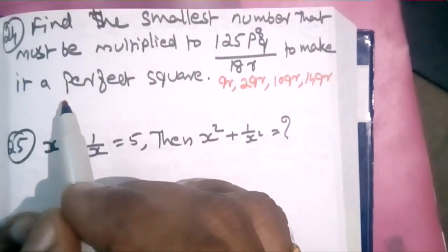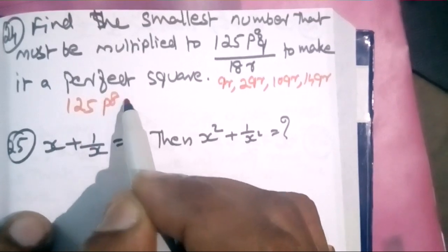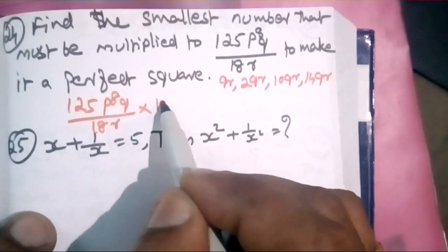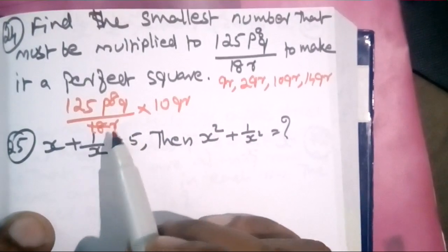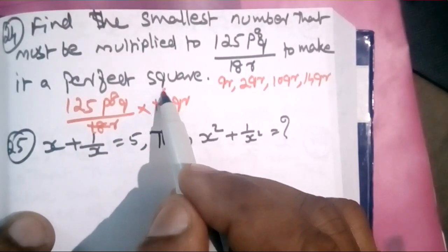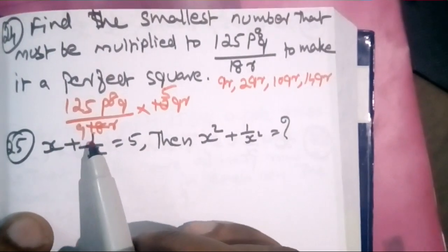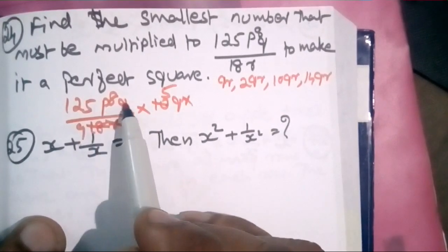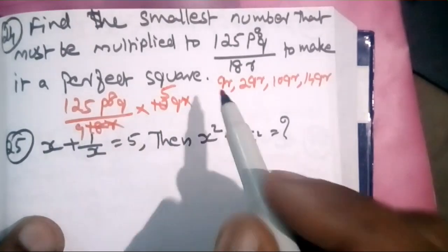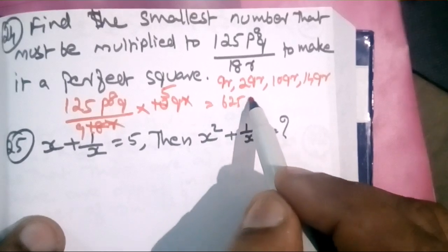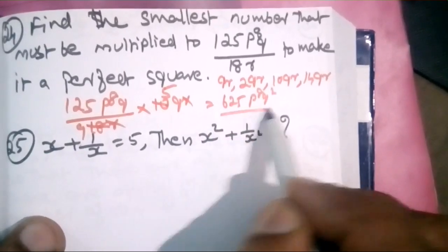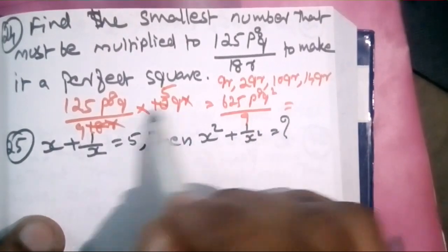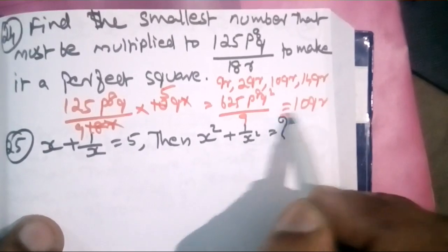We multiply by 10 times per R. If we multiply R with 5 times, we multiply R by 4 times. The perfect square requires 10QR to be done. So the answer is 10QR.